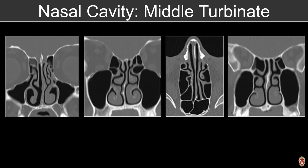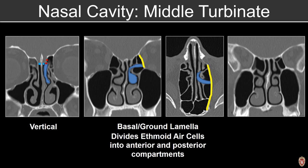The middle turbinate is the most complex of the three turbinates, with three sites of attachment. The superior attachment attaches to the junction between the vertical and horizontal lamella of the cribriform plate. The horizontal limb swings laterally and attaches to the lamina papyracea. The basal lamella or ground lamella of the middle turbinate divides the ethmoid air cells into anterior and posterior compartments, with the posterior limb attaching to the lateral wall of the nasal cavity.